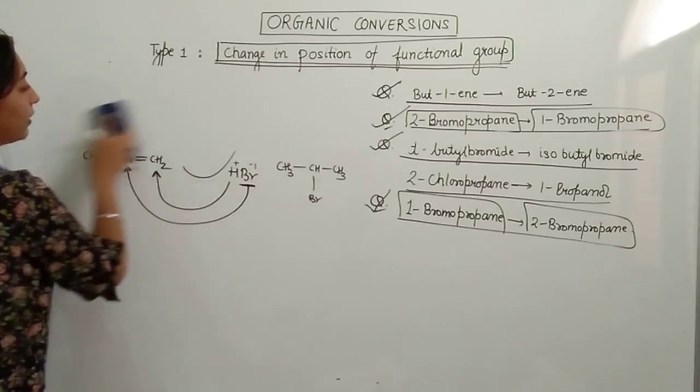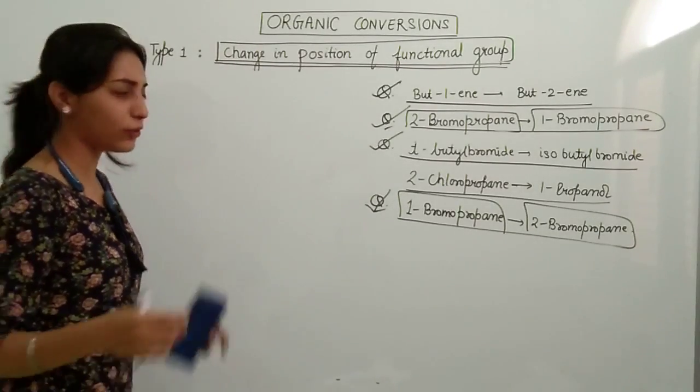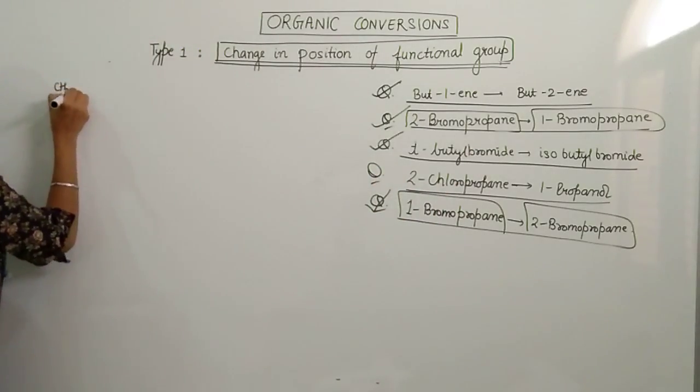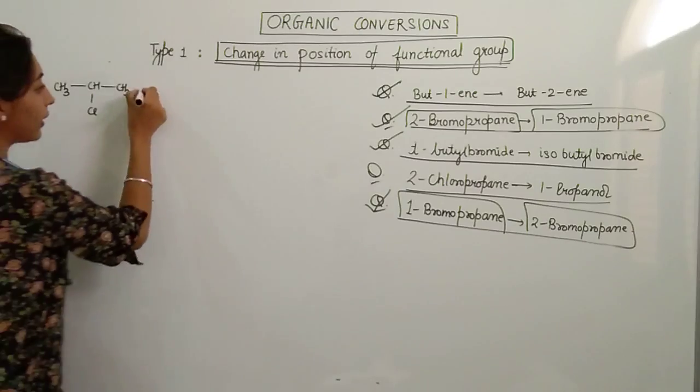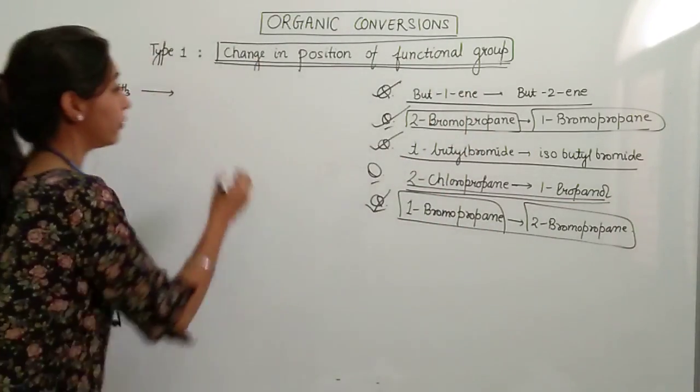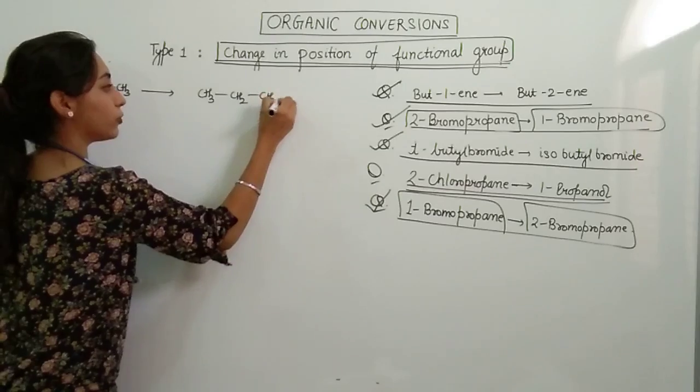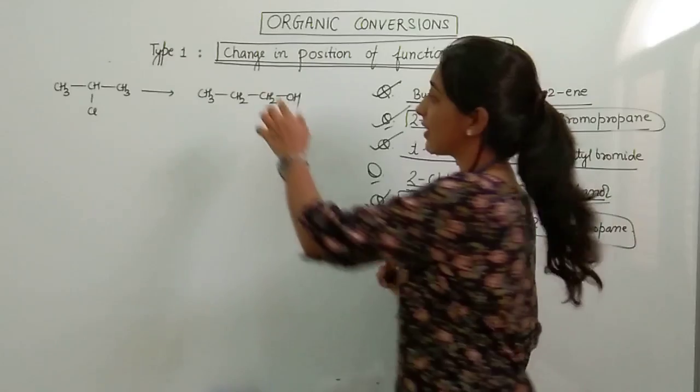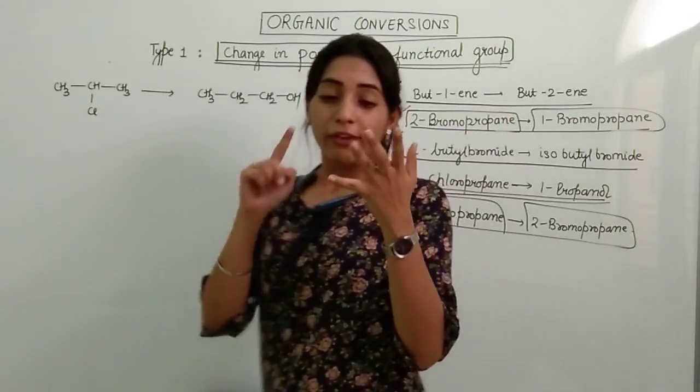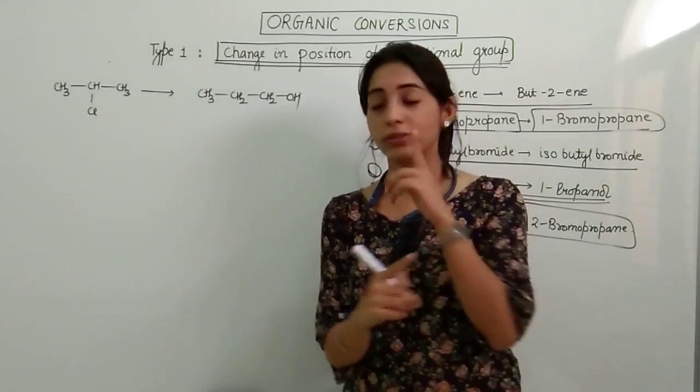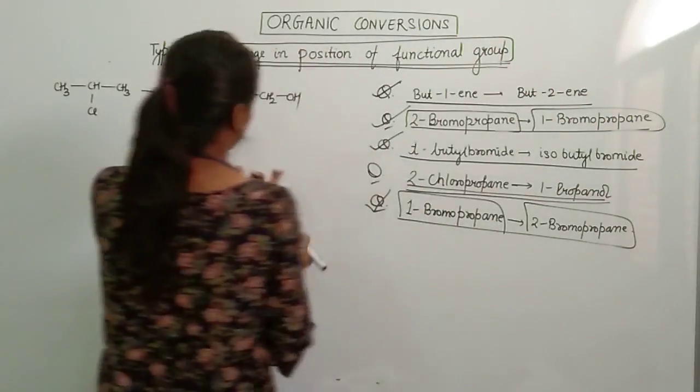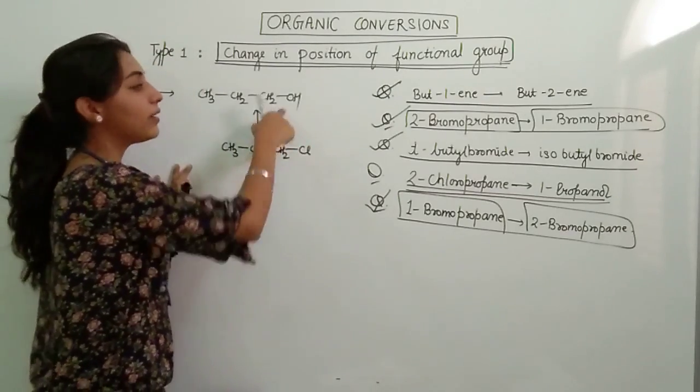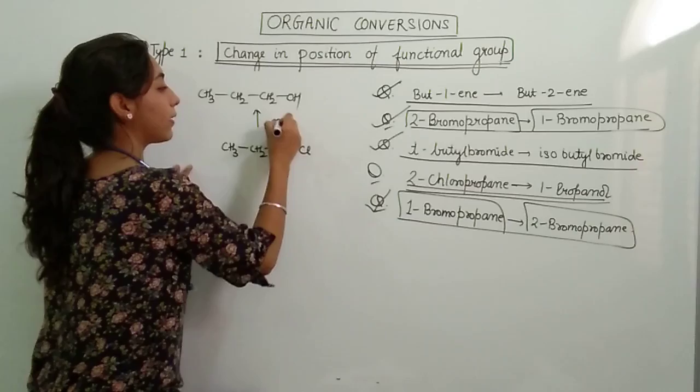Now finally I am going to do the last question which is 2-chloropropane. This is CH3-CHCl-CH3 and we have to convert to propan-1-ol which is CH3-CH2-CH2OH. Now see how to do it. You must be thinking, this doesn't belong to the category where there is a change in position of functional group. But I know one thing: wherever there is Cl, I can easily convert it to OH. So what if I do in the opposite direction? If I make CH3-CH2-CH2Cl, this can be easily converted to this by adding aqueous KOH. Don't you think this and this are the same thing we did, just change in the position of functional group?